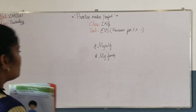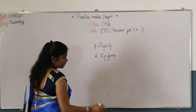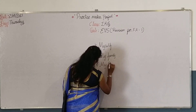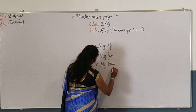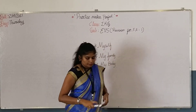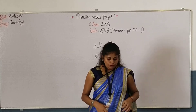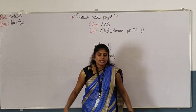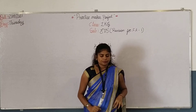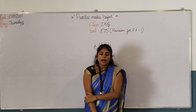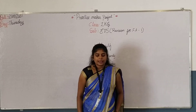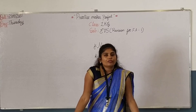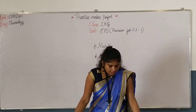The third lesson will be 'My Body.' Parts of the body: face, arms, fingers, legs, and toes. Parts of the face: head, forehead, eyebrow, eyes, ears, nose, mouth, tongue, cheek, and chin.